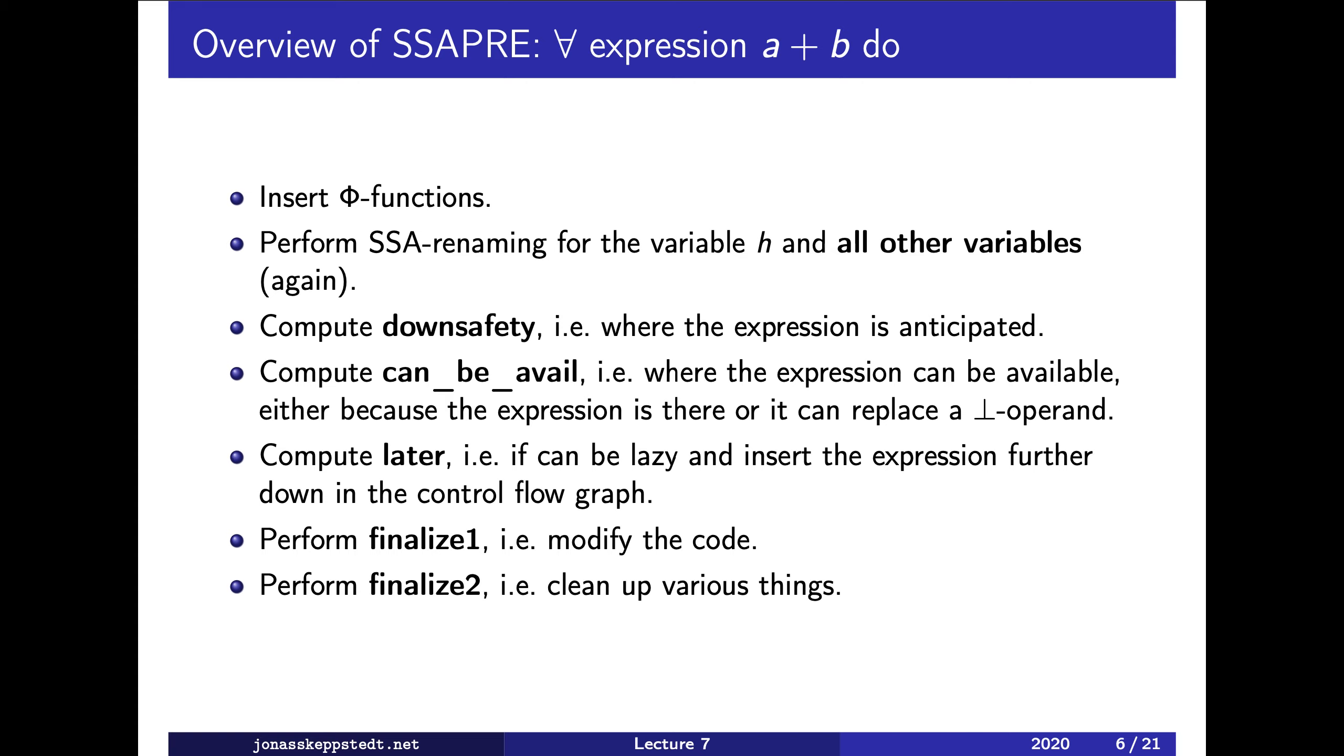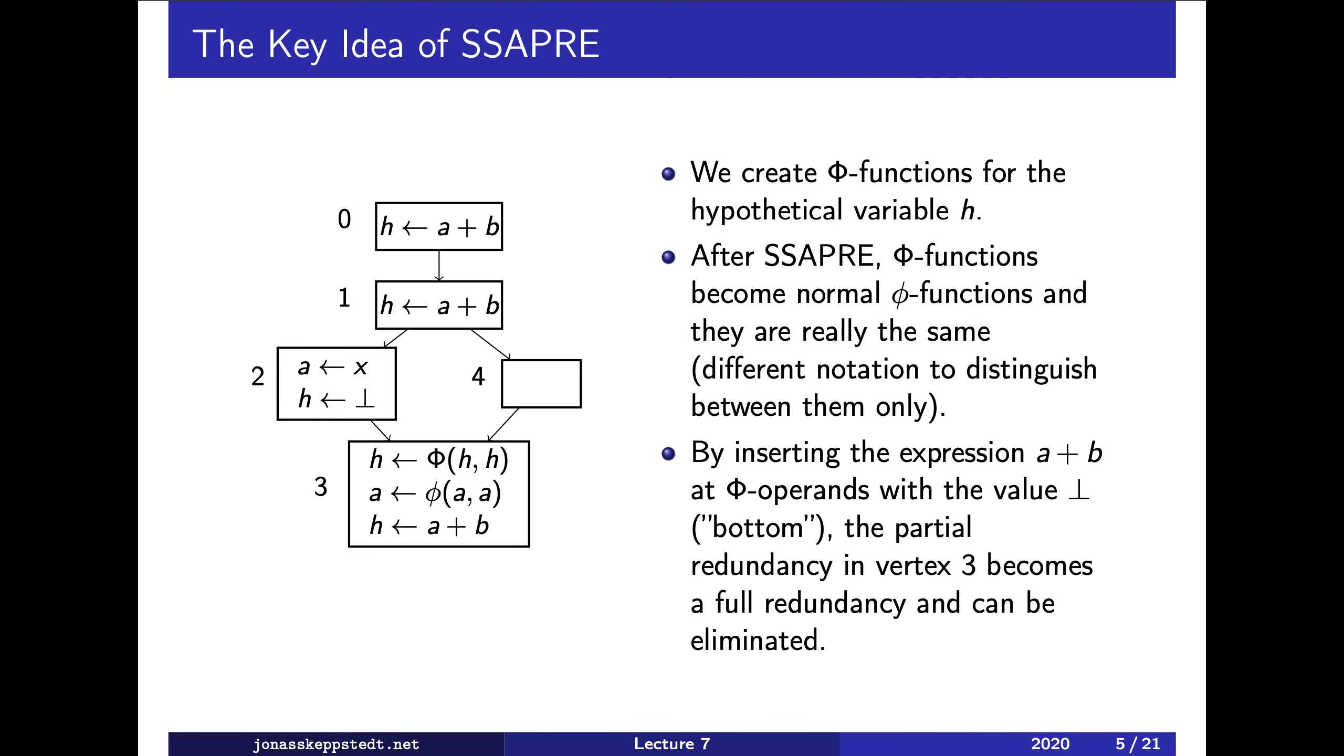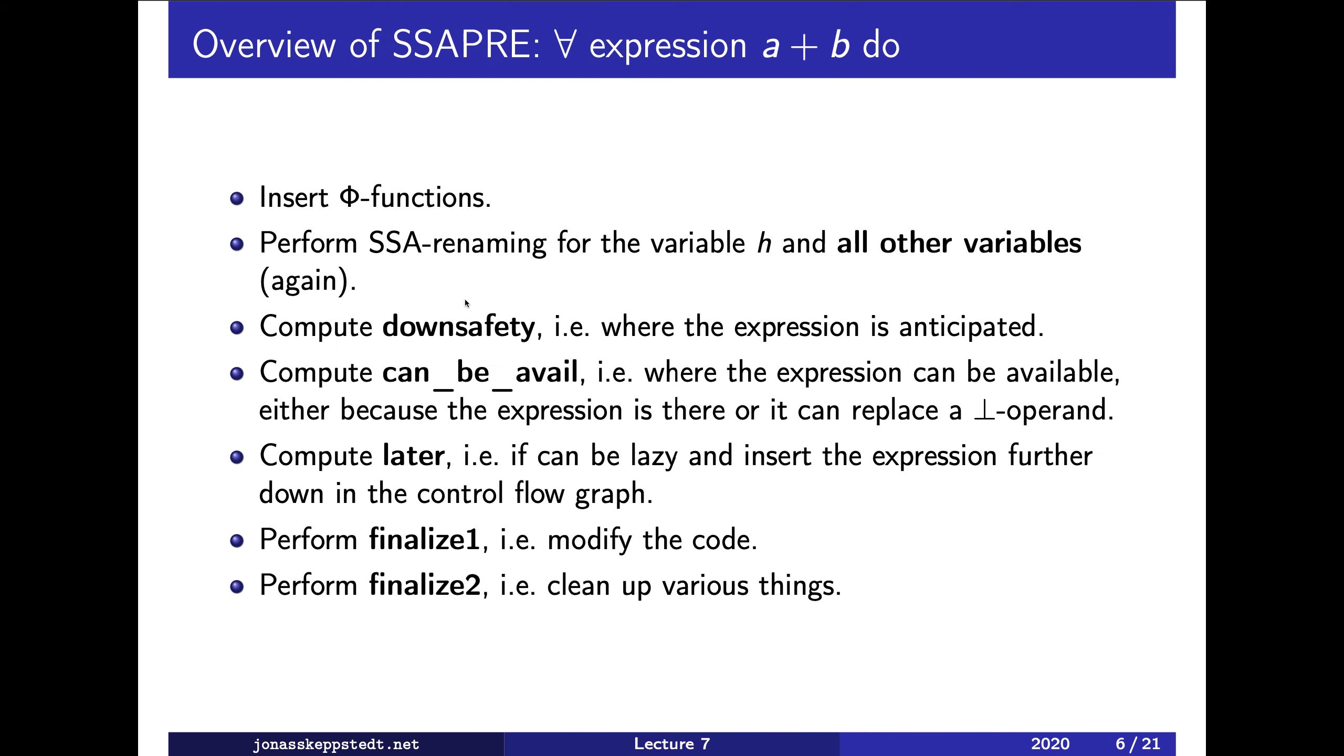Okay, so the first thing we do is to insert such phi functions, and where should we insert them? Well, it is in the dominance frontiers of the expressions, where we assign a value to the expressions. Then what we do is to redo SSA renaming for this variable and for all other variables again. This is not part of the efficient algorithm, but it's just to explain what can be done, but the efficient algorithm just keeps the renamed variables and the indices and figures out when which expression is available at which version of the operands.